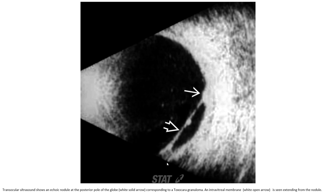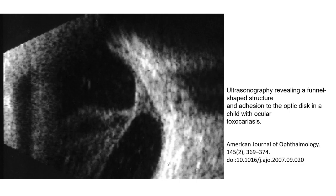This case on ultrasound shows an echogenic nodule at the posterior pole of the globe corresponding to a toxocara granuloma. An intravitreal membrane is seen stemming from the nodule. The second ultrasound case of toxocariasis reveals a dome-shaped structure adherent to the globe in a child with toxocariasis.